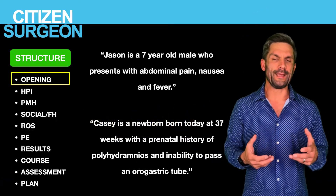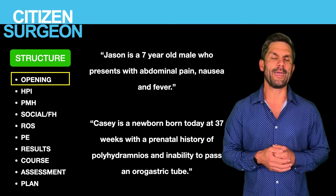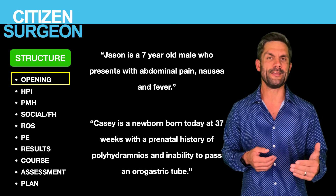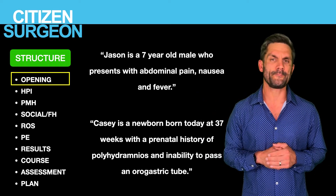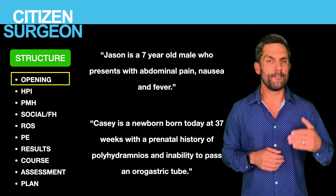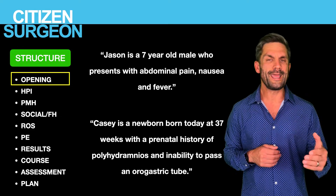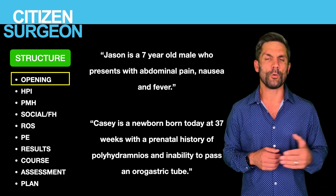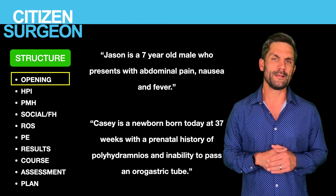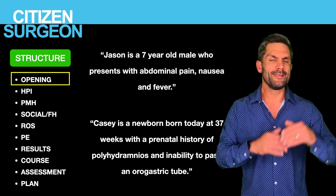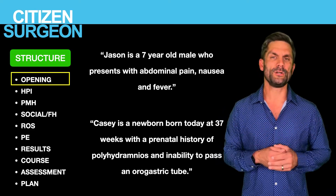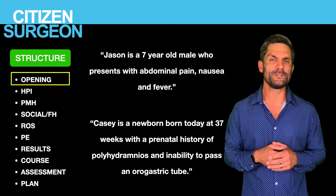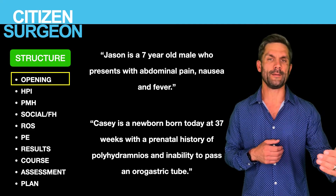Let's get to the opening — that one-line bullet. For example: 'Jason is a seven-year-old male who presents with abdominal pain, nausea, and fever.' Or: 'Casey is a newborn born at 37 weeks gestation with a prenatal history of polyhydramnios and an inability to pass an orogastric tube.' This bullet is going to capture your listener's attention and start them thinking about possible differential diagnoses as they listen to the rest of the story.